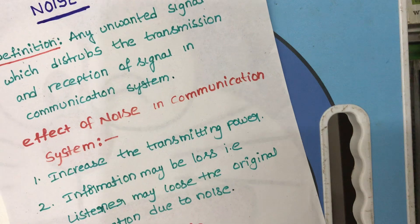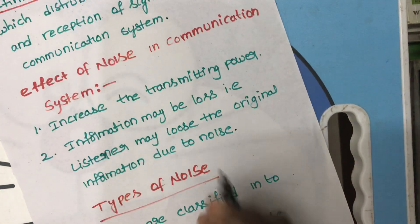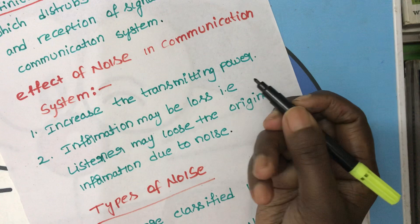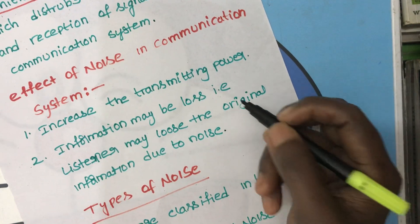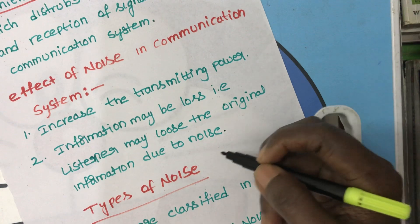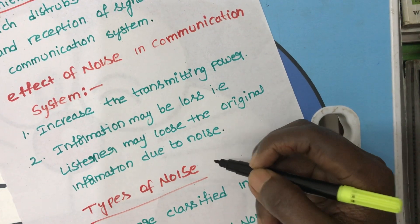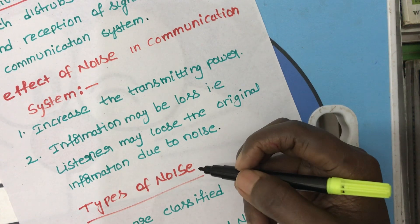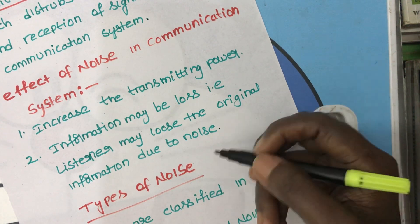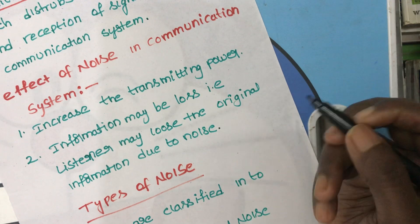Effect of noise in communication system: It increases the transmitting power, and second, information may be lost. That is, listener may lose the original information due to noise. Due to the noise, listener may misunderstand the original signal.